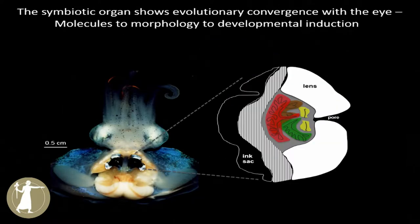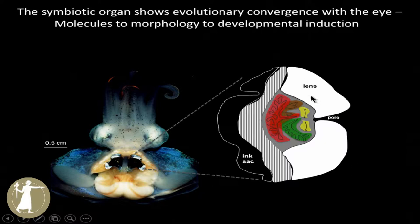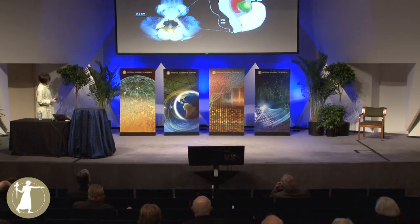What we found is that this symbiotic organ in this animal shows evolutionary convergence with the eye — so much convergence that it's not just morphological, it goes all the way down to the molecules. For example, this lens, although muscle-derived, has one of the same proteins in very high concentration to behave as a lens as the eye of the squid. This goes to morphology and all the way down to developmental induction. It's really a cool system.